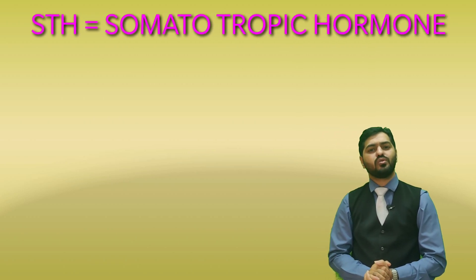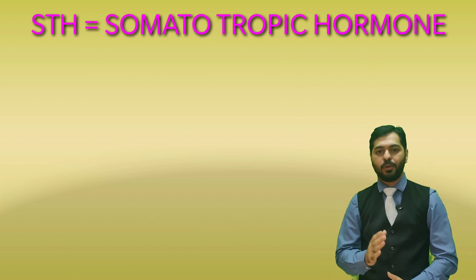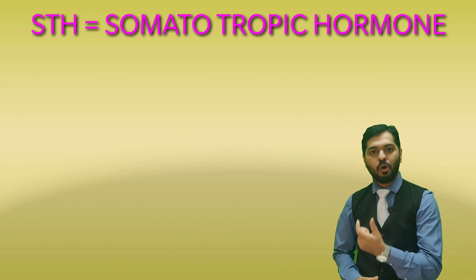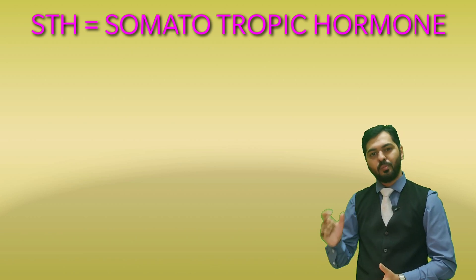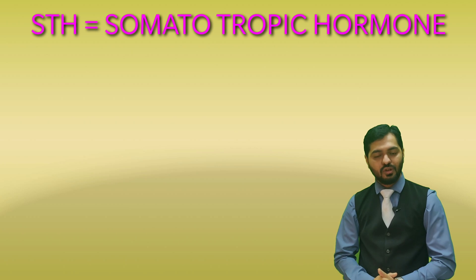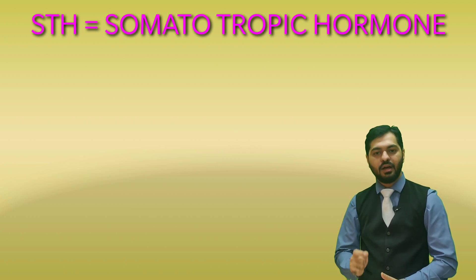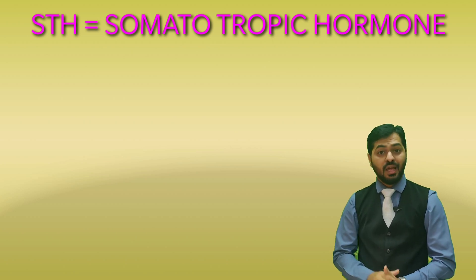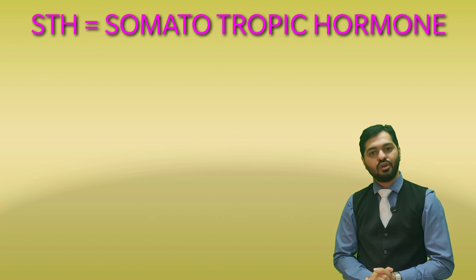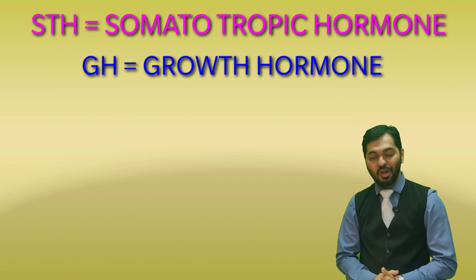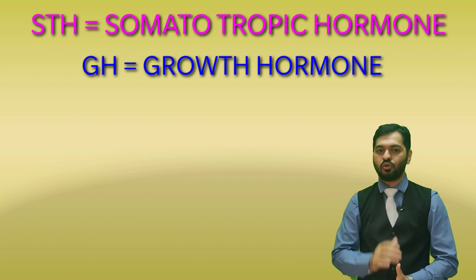Let us begin with the first hormone of the pars distalis, known as STH — the somatotropic hormone. The word 'tropic' indicates it acts on distant organs, and 'somatic' means body structures, so this hormone acts on body structures. Its more famous name is GH, the Growth Hormone. So we are starting with the discussion about the Growth Hormone.